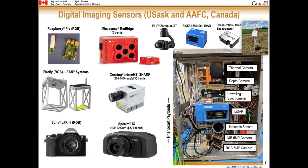Here is the list of all possible digital imaging sensors available at the University of Saskatchewan and AFC Lethbridge. First is a Raspberry Pi 5-megapixel RGB camera system. Second is a Firefly RGB camera developed by Lean Systems in collaboration with AFC Lethbridge, which also measures microclimate inside the greenhouse. Third is a Sony camera, and fourth is a MicaSense multispectral 5-band camera. There are also hyperspectral cameras ranging from 150 to 200 bands, along with thermal cameras, depth cameras, an upwelling spectrometer, radar scanning system, ultrasonic sensors, and NIR-RGB sensors assembled on the Phenocar.